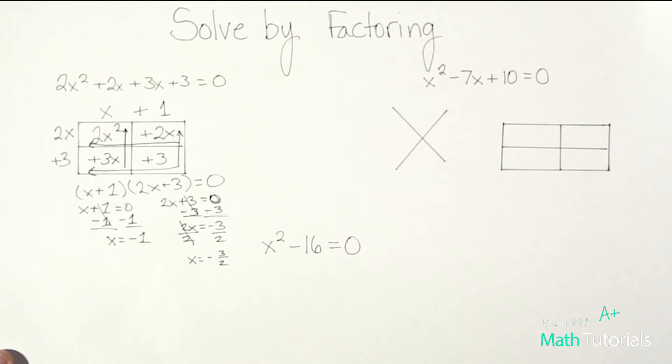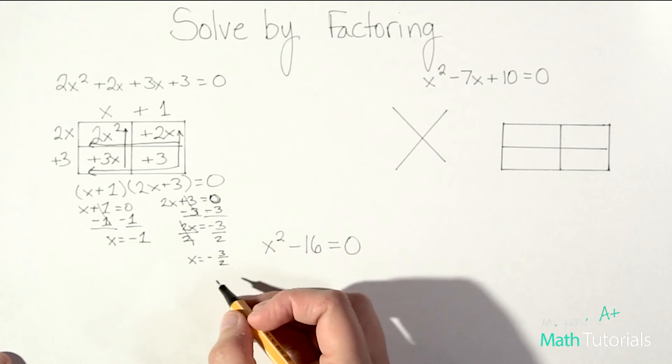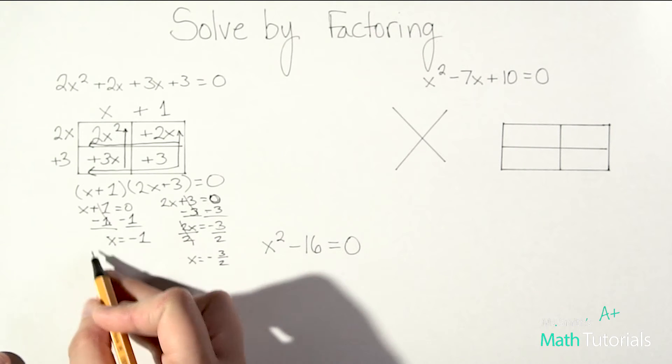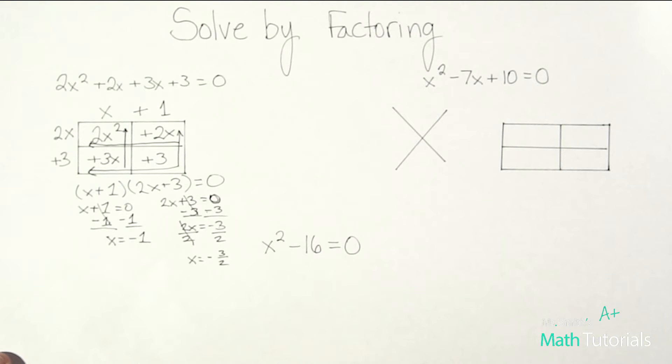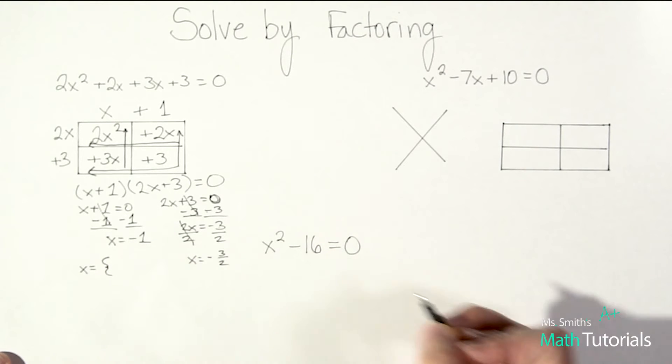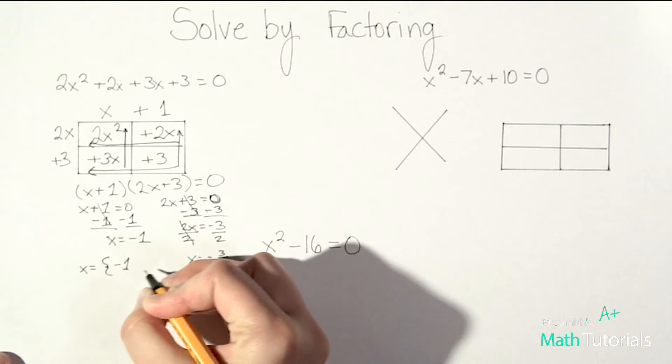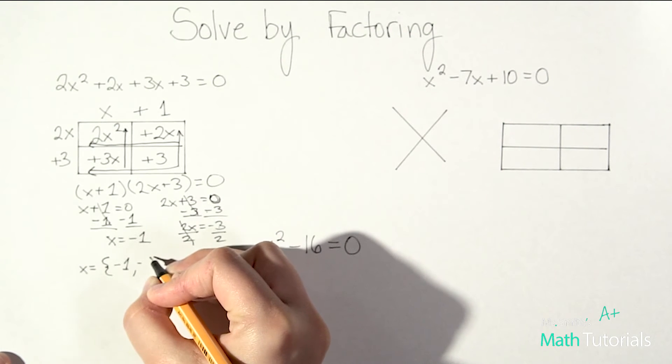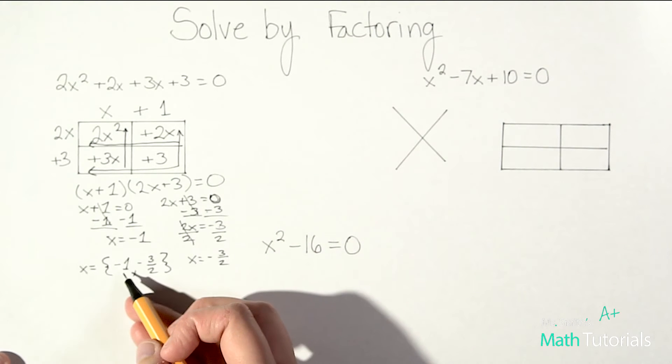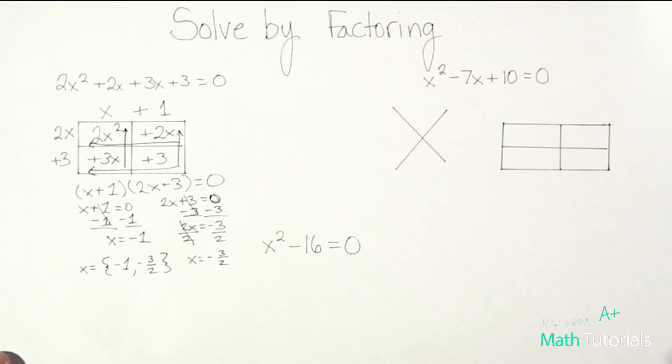So you'll notice we ended up with two answers. Usually we will. Sometimes we'll only end up with one and sometimes we end up with three. So just something to keep in mind. But in this case, some students just will circle their two answers. That works as long as your teacher is okay with that. So we would write this as x equals brace, negative one, negative three over two, and brace. Notice these are braces. They are not parentheses. Braces indicate to us that this is a solution set. So negative one would be a solution as well as negative three over two.